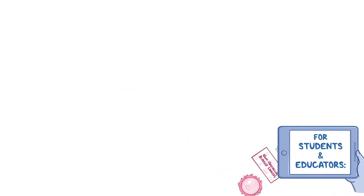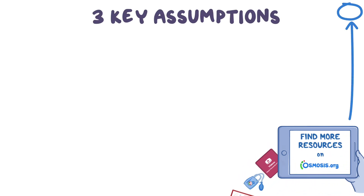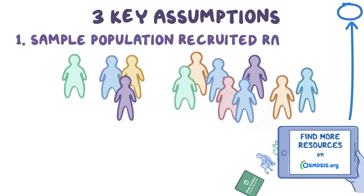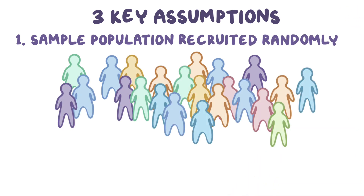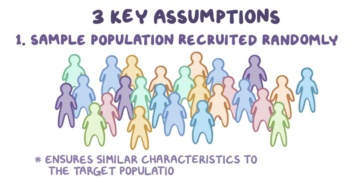When doing any parametric test, there are three key assumptions we have to make about the population. First, the sample population must have been recruited randomly. Choosing names randomly ensures that people included in the study will have similar characteristics to the target population. This is important because it ensures that the results of the test can be applied to the target population, meaning it has good external validity.